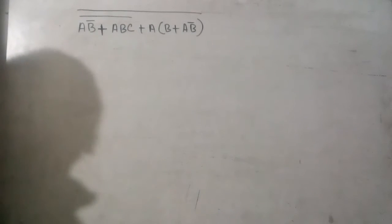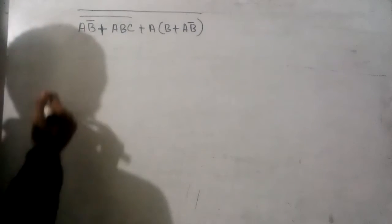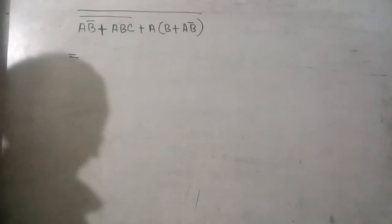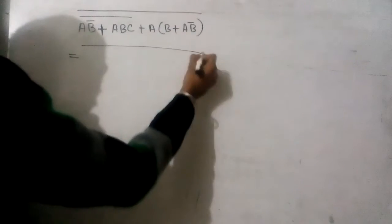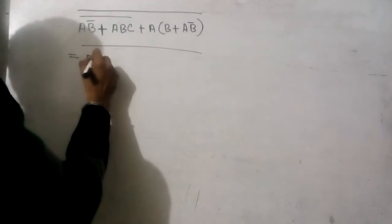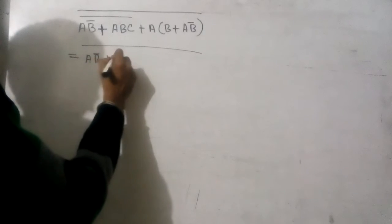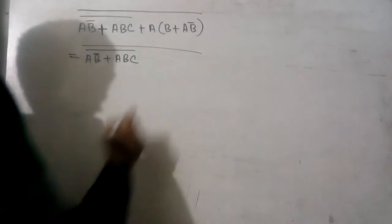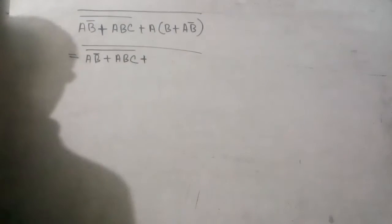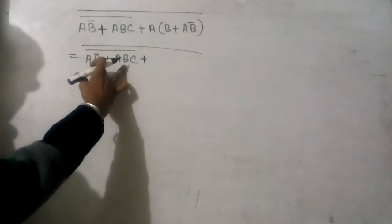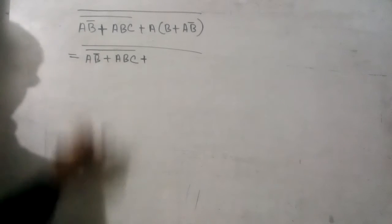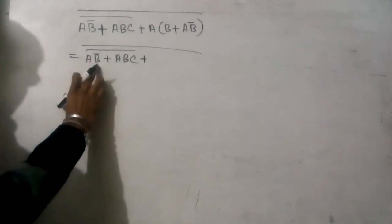Now we will simplify this Boolean expression. What can we do first? There is a complement of B in this section, so we cannot take it common from there. But A is common — yes, we can take A common from here.